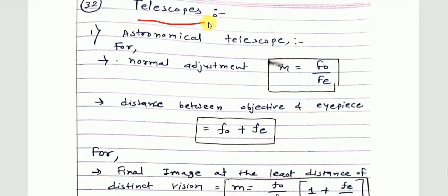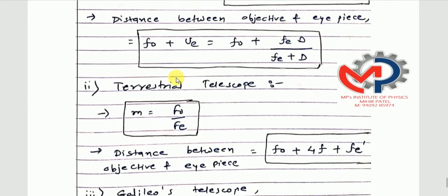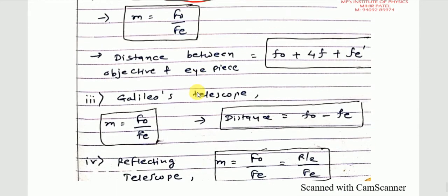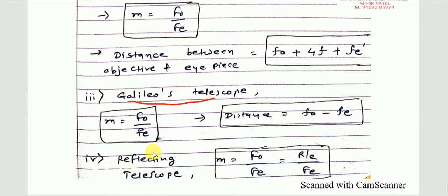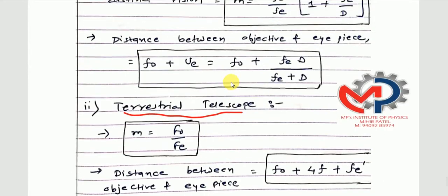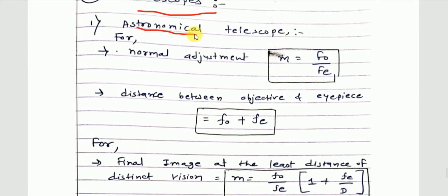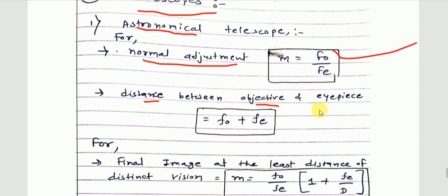Finally, the last concept is telescopes. There are different types of telescopes: first is the astronomical telescope, second is the terrestrial telescope, third is Galileo's telescope, and fourth is the reflecting telescope. For astronomical telescope, the magnification formula for normal adjustment is M = fo/fe. The distance between objective and eyepiece is fo + fe.